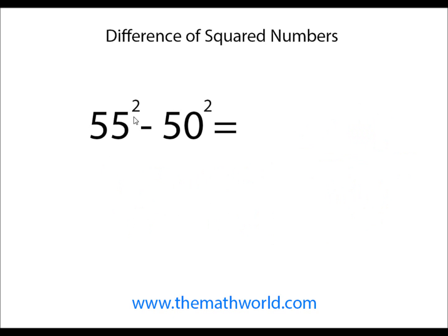Last example we're going to be looking at is 55 squared minus 50 squared. We'll go ahead and do 55 plus 50, add both the numbers up. We get 105. Then we're going to subtract the numbers. So 55 minus 50 is 5.